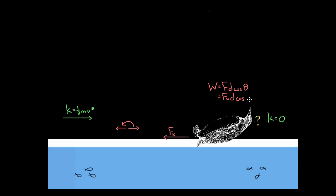So this angle would be 180 degrees, or pi radians. And cosine of 180 is going to give you negative one. So the work done by the force of friction on this penguin is going to be negative FkD — negative the force of friction times the distance the penguin slid to the right.